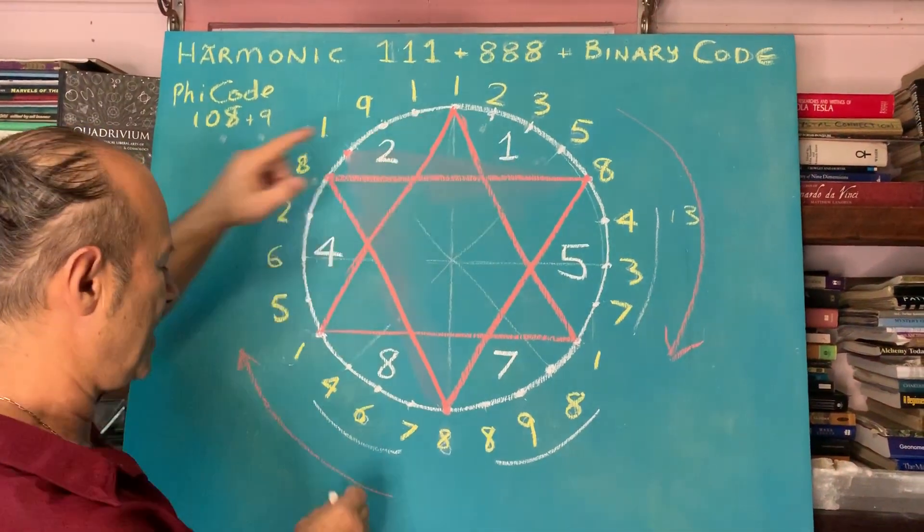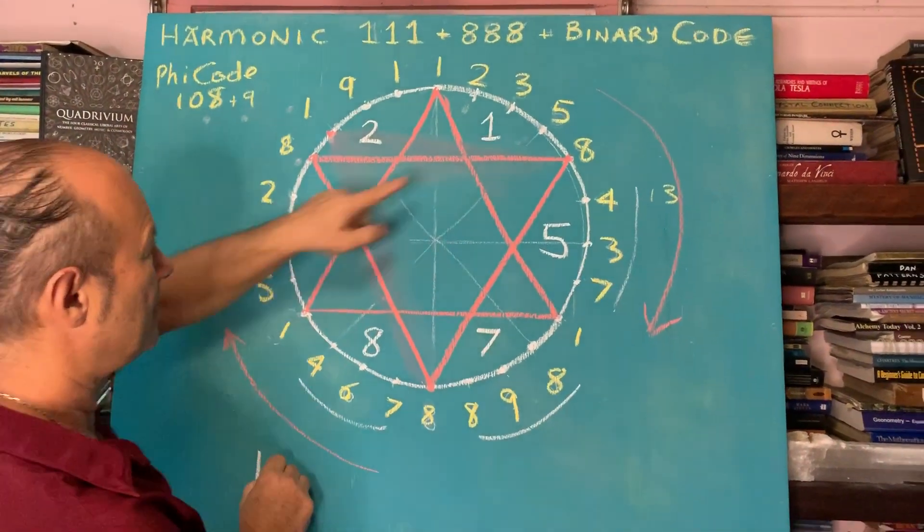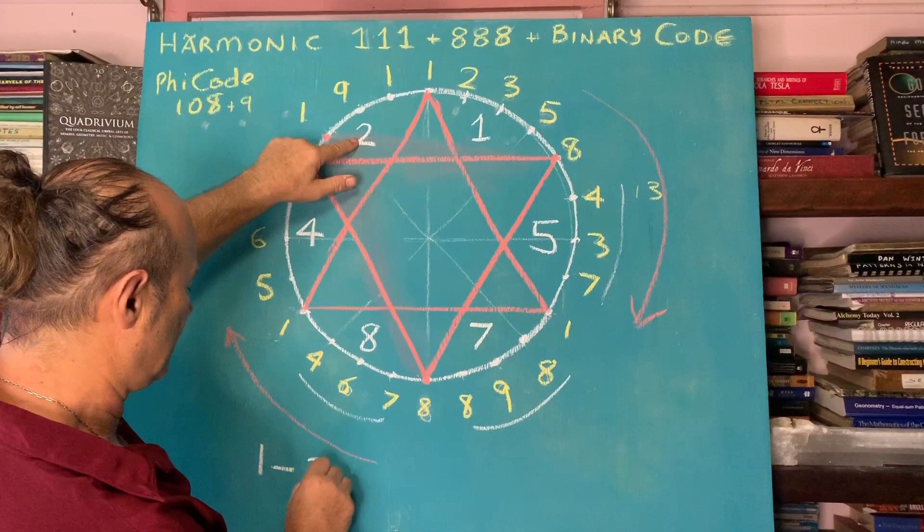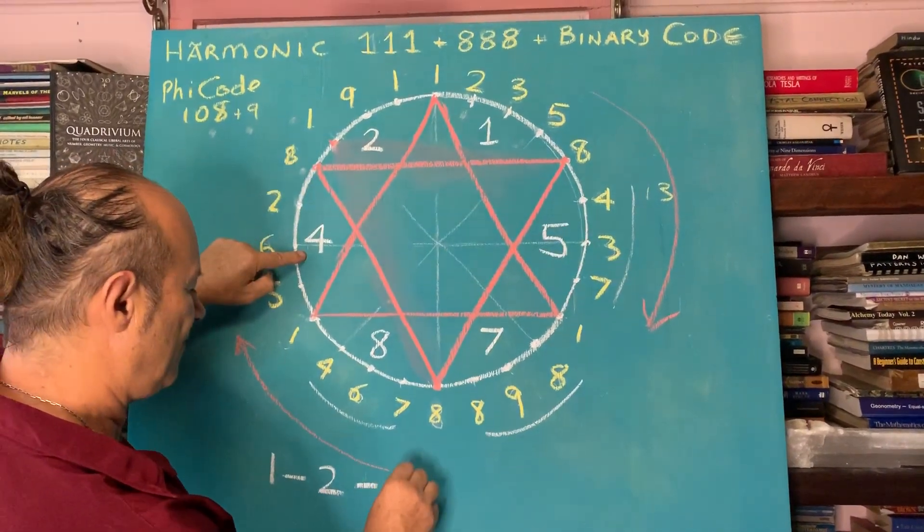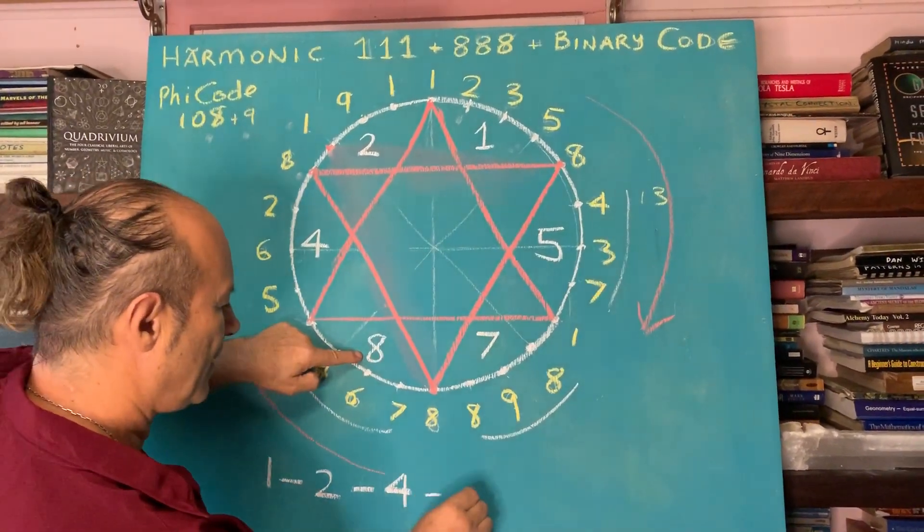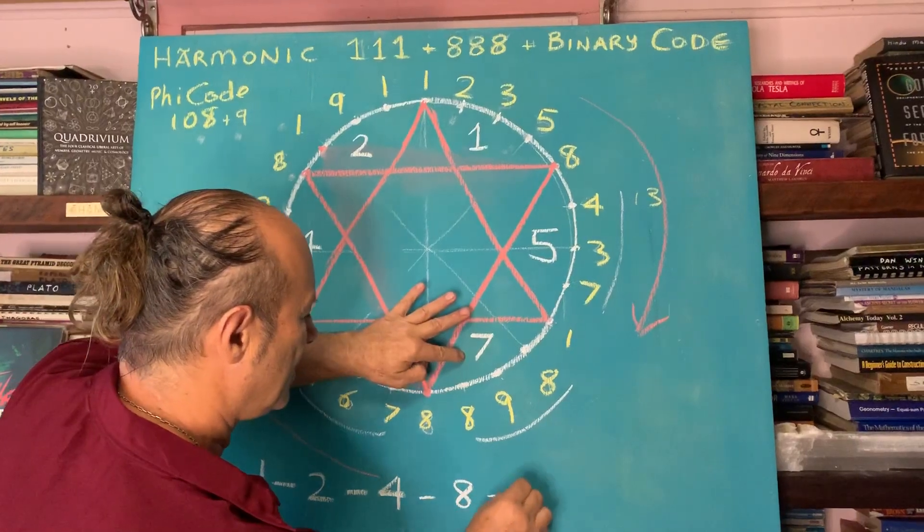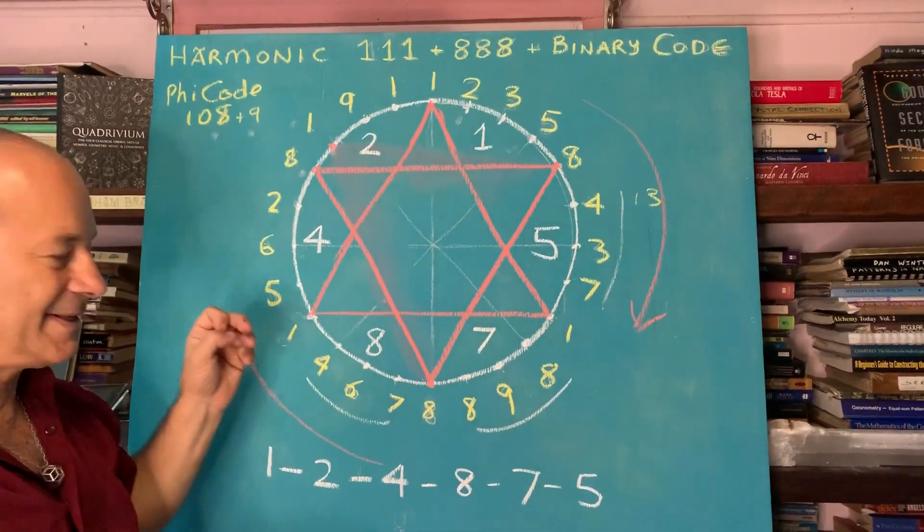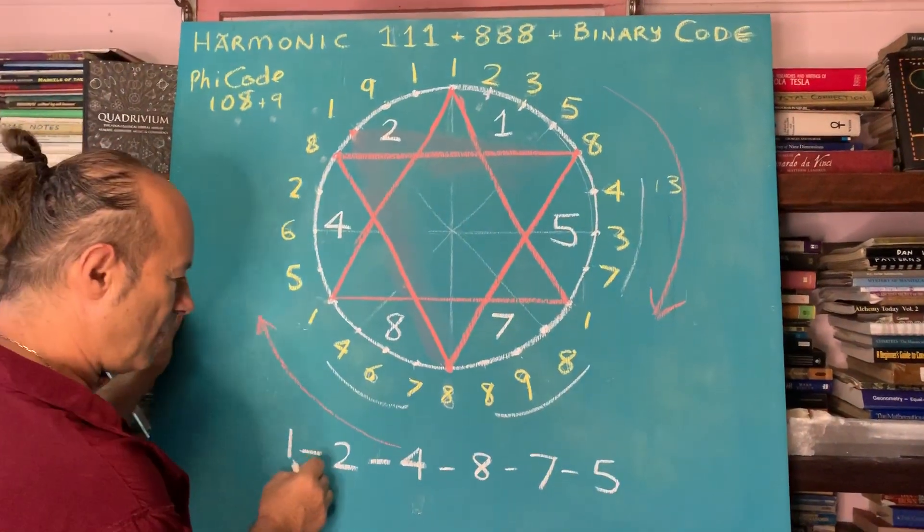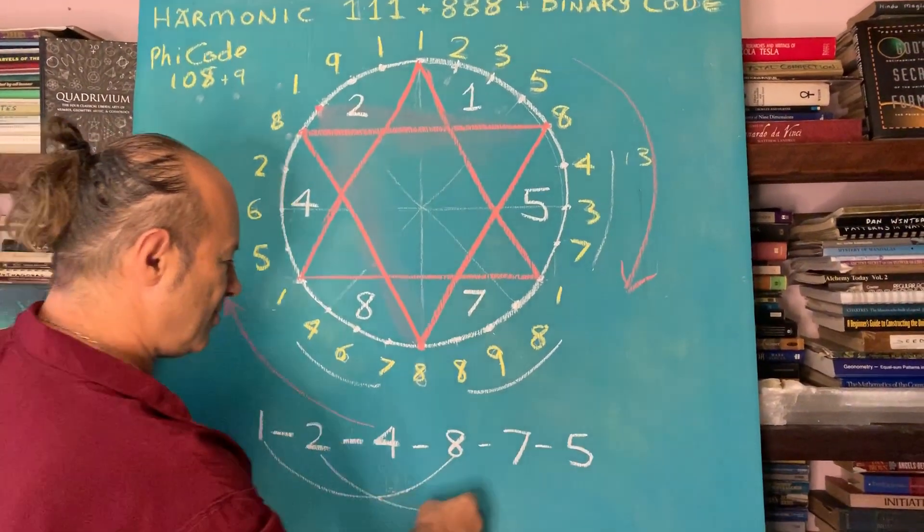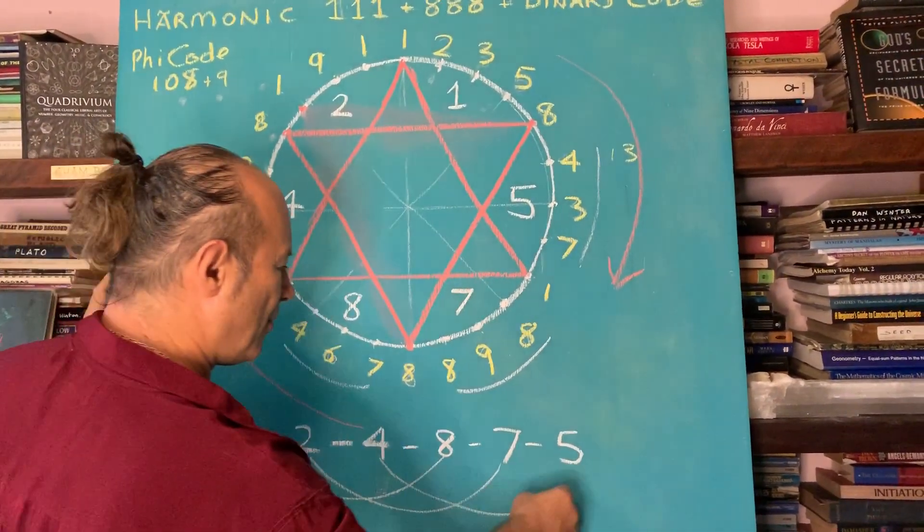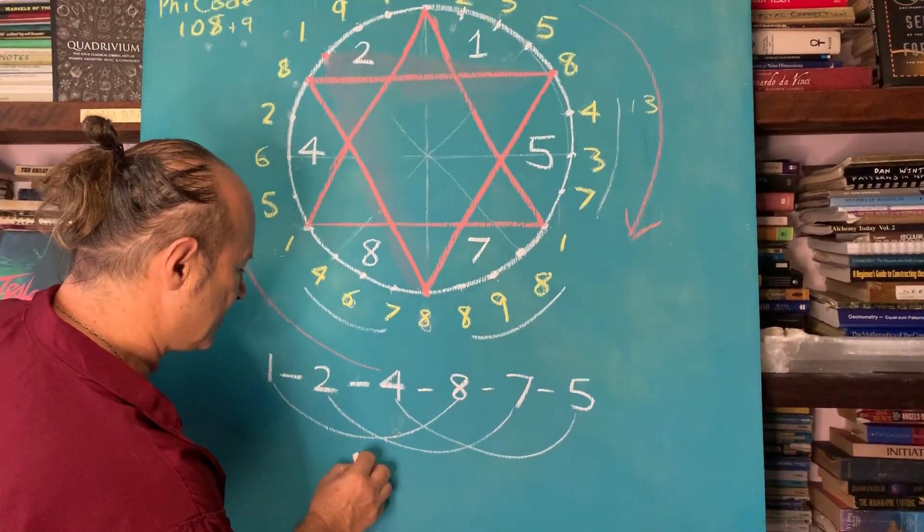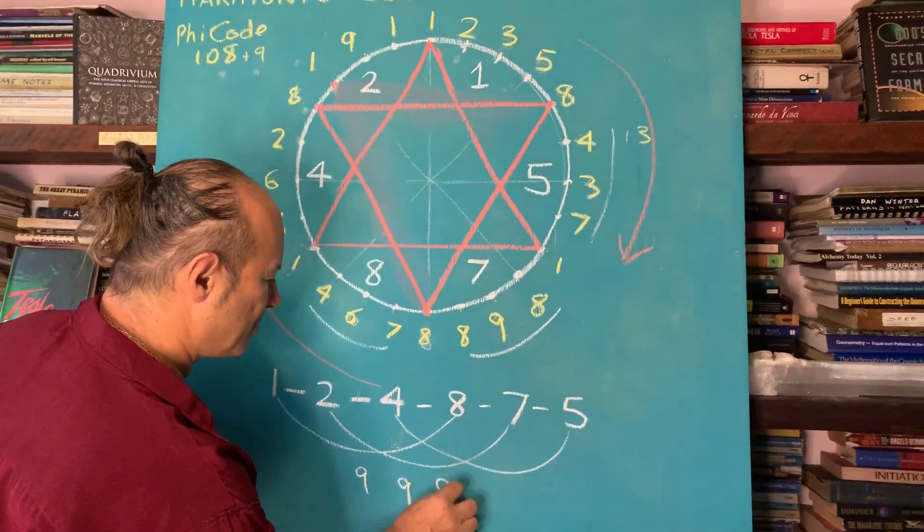This sequence here is one, two, four, eight, seven, five. One and eight is nine. Two and seven is nine. Four and five is nine. So this repeats the triple nine code.